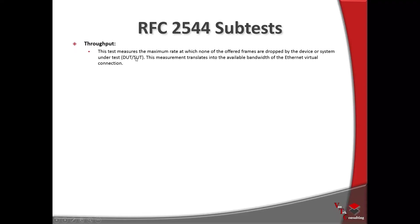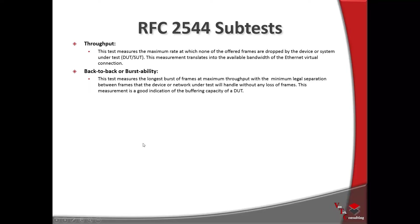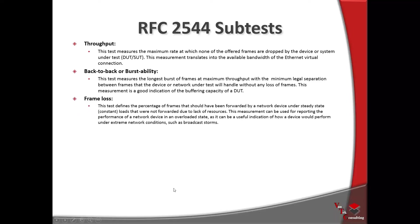The RFC 2544 has four subtests. First, throughput — testing the maximum rate that traffic is traversing a network interface without dropping any frames. Second, back-to-back or burstability — this measures how long we can burst frames at maximum throughput. So if we had a one-gig pipe, we'd put in a gigabit of traffic at the minimum interframe gap, as close together as possible, and see how long we can go at that maximum rate before losing any frames. Third, frame loss — looking at the percentage of frames that would have been forwarded by a network device under steady load that weren't forwarded, due to lack of resources.